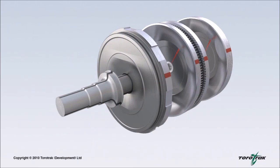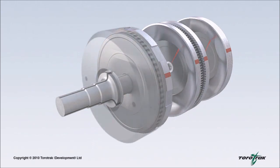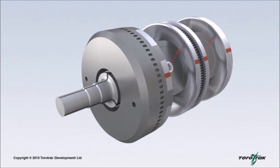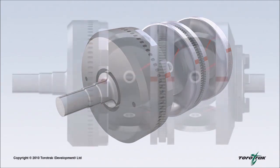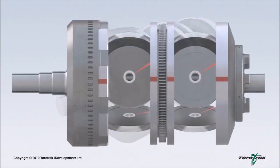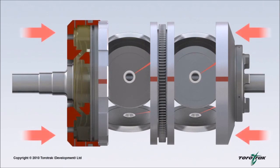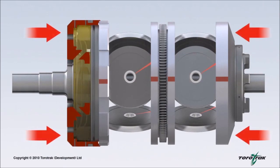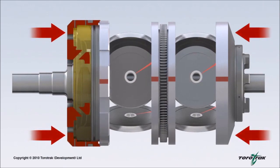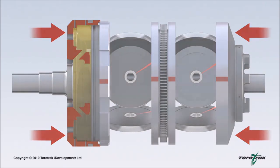A hydraulic cylinder, or end load drum, containing one of the input disks, is positioned at one end of the variator. Hydraulic pressure in this drum forces the disks and rollers together, creating the required contact pressure. Traction fluid is introduced under pressure into this cylinder, generating the required end load.